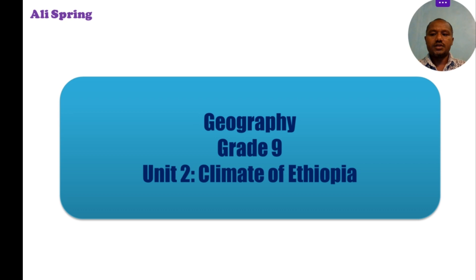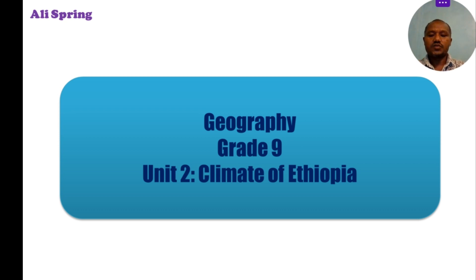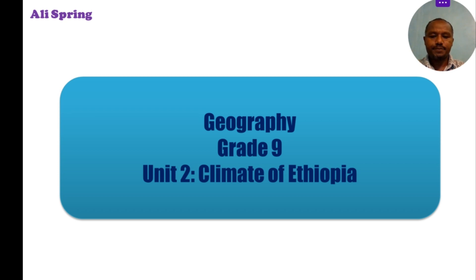This is a spatial and temporal variation of the sources of the wind and the inter-tropical convergence zone in Ethiopia, located in the tropics, and the seasons in January, June, or December.